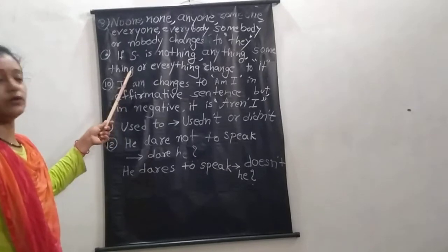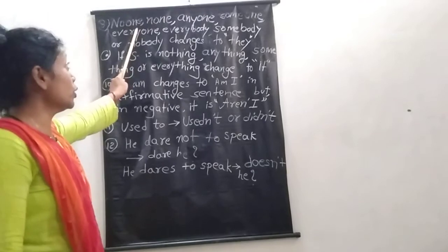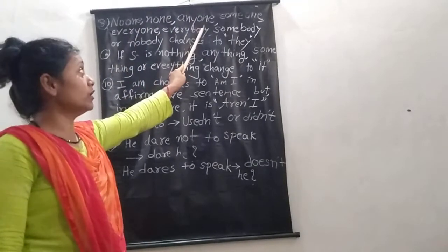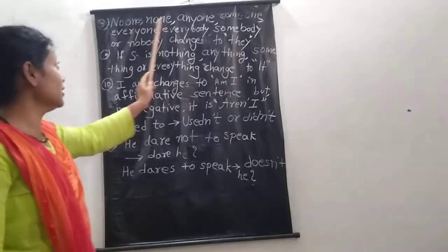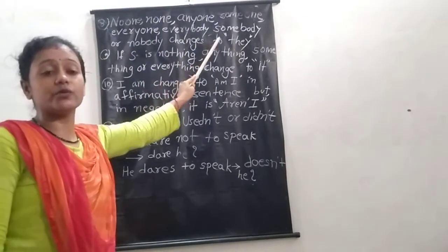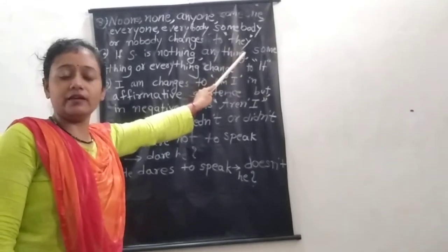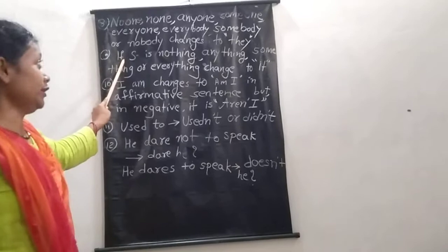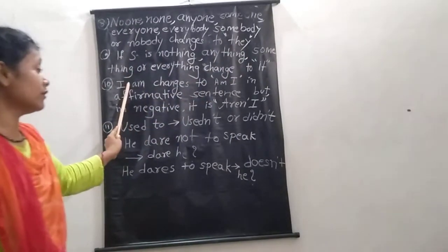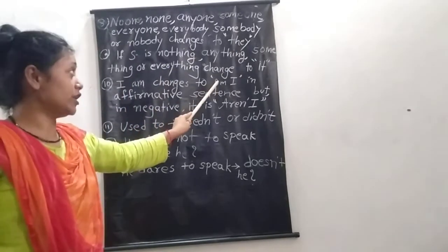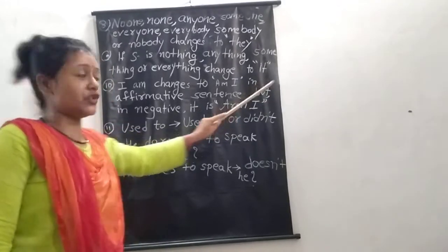Rule 8: If the subject is 'no one', 'none', 'anyone', 'some', 'everyone', 'everybody', 'somebody', or 'nobody', it will change to 'they' in the question tag. If the subject is 'nothing', 'anything', 'something', or 'everything', it will change to 'it' in the question tag.